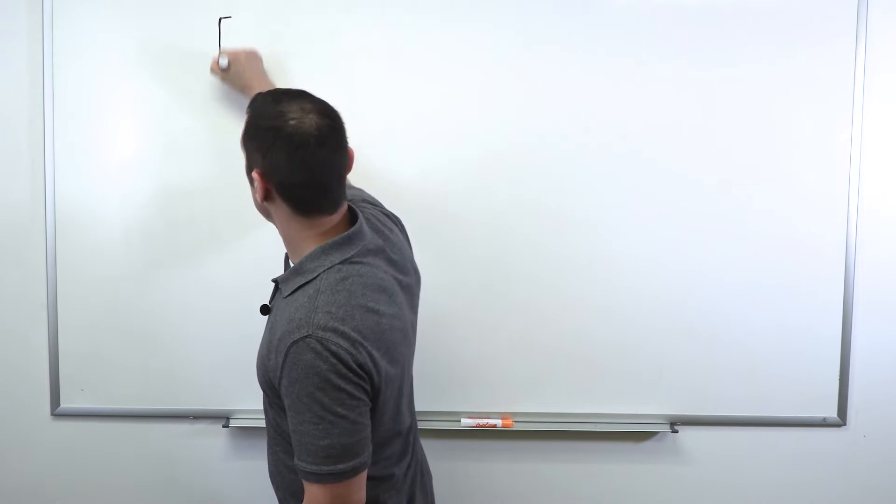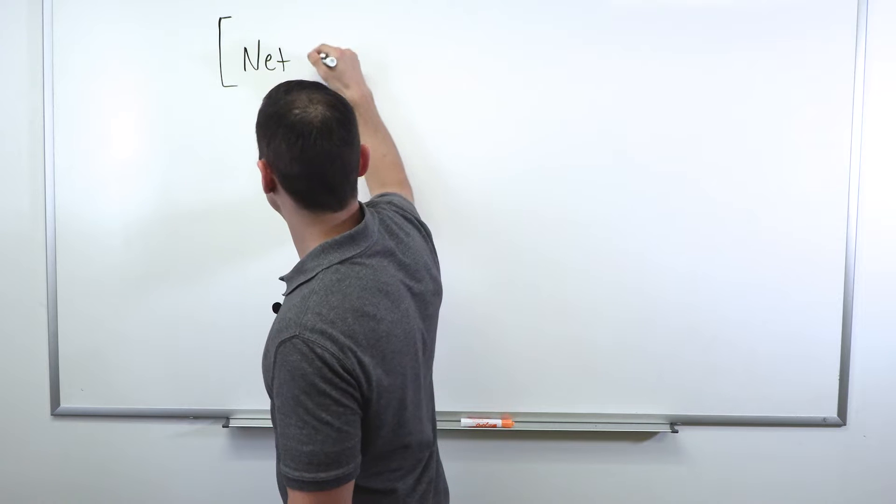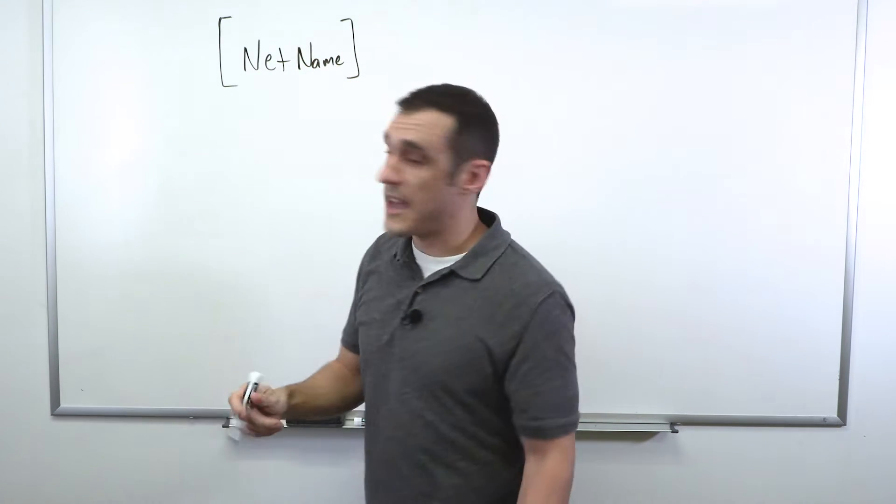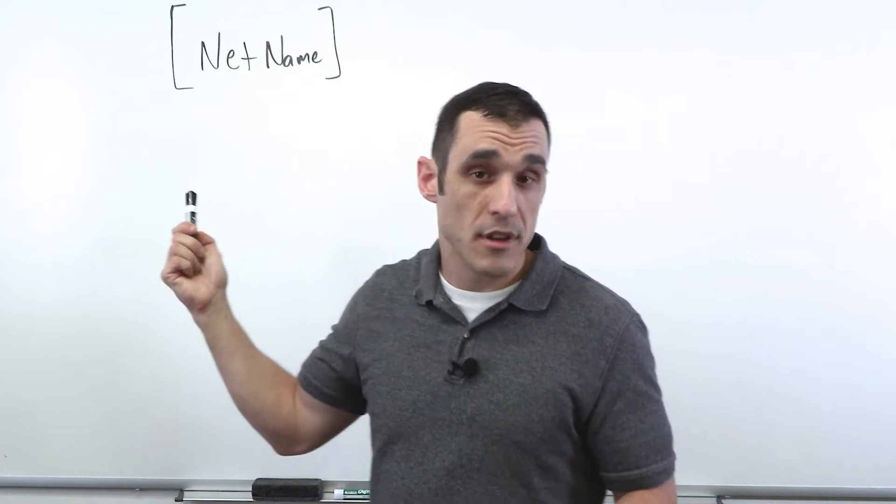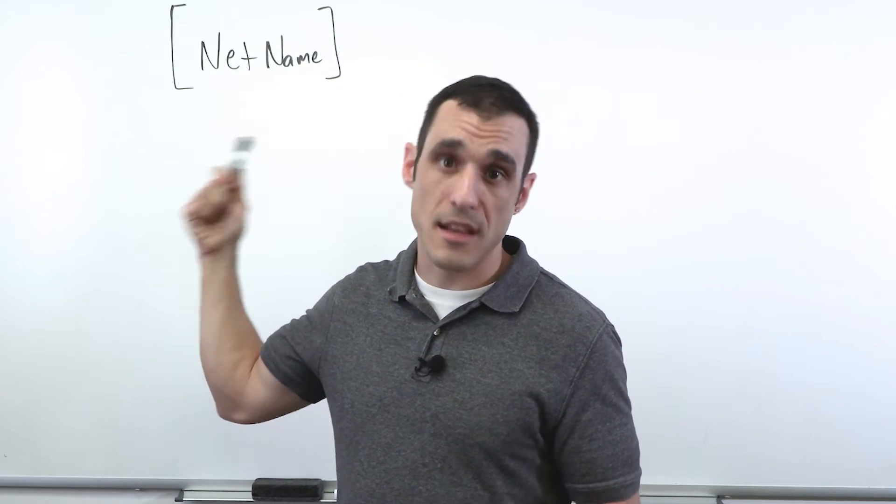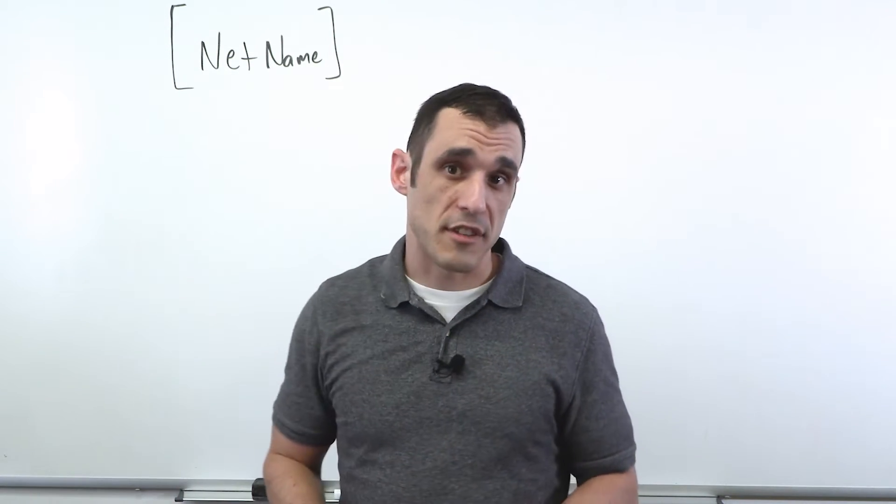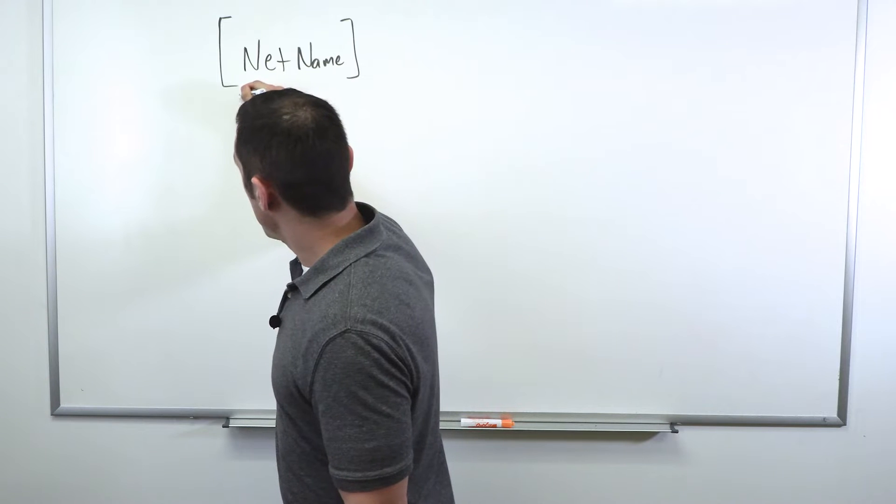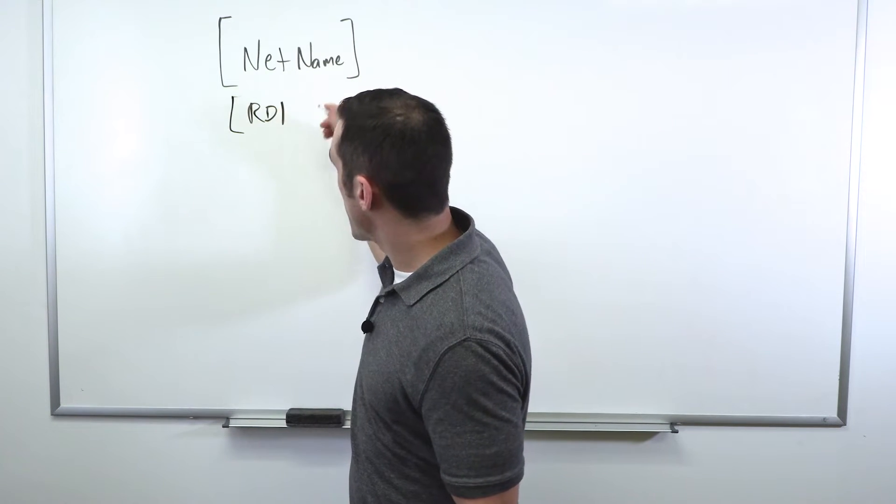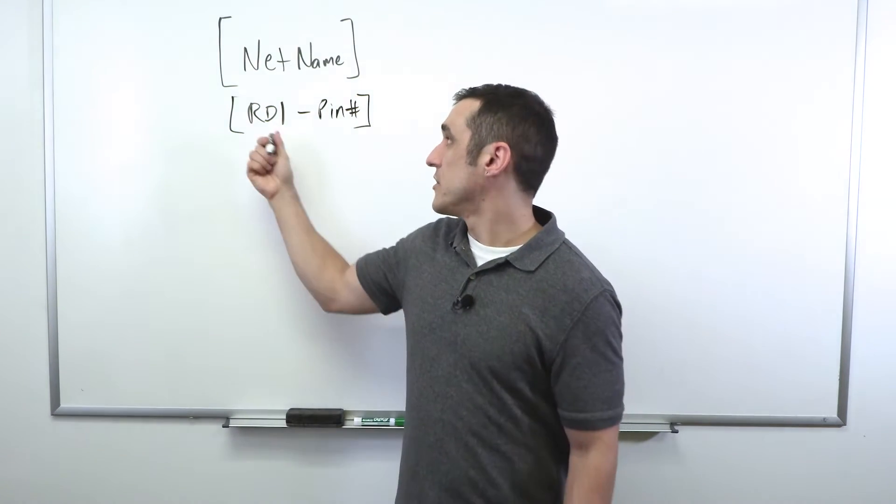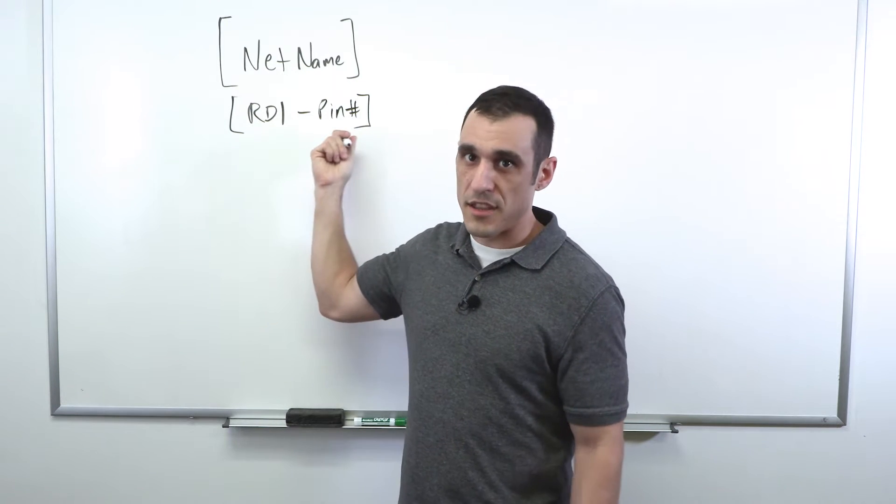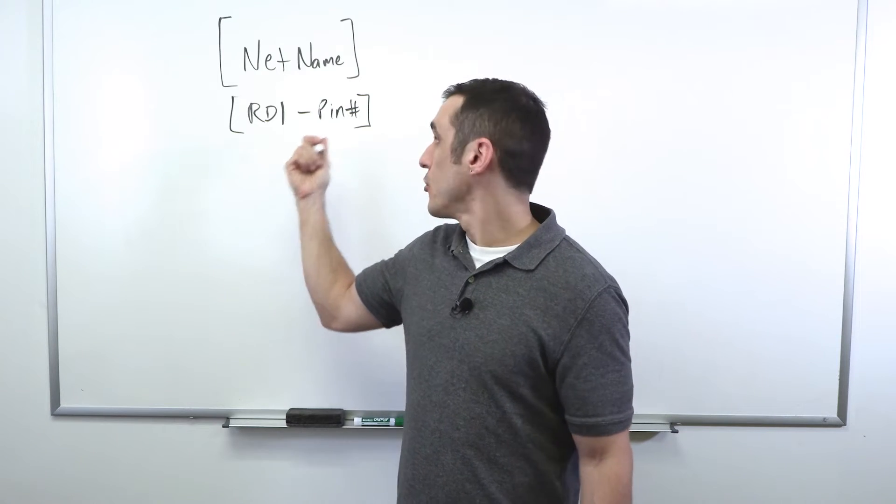So the first piece of information is a net name. Every net in your schematics and your PCB has a name. It could be auto-generated, or you could give it your own name. Usually you give it a name based on the protocol, a pin number, or the signal name within that protocol. So if you're using like I2C or SPI, those nets will have specific names. And it's best practice to do that just so you can keep track of everything. The next piece of information is the reference designator where you start the net and a pin number. This reference designator is for a specific component in your schematic. The pin number is the actual pin on the component where the net begins.